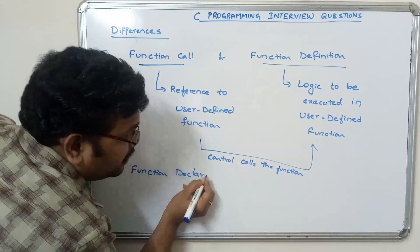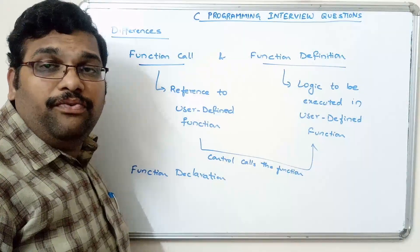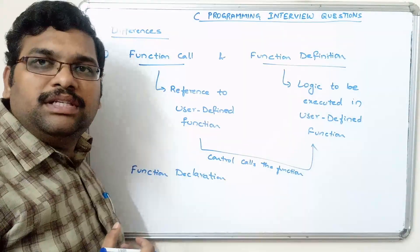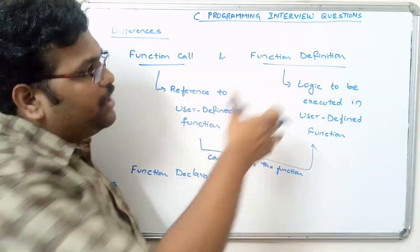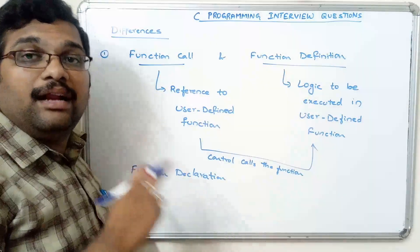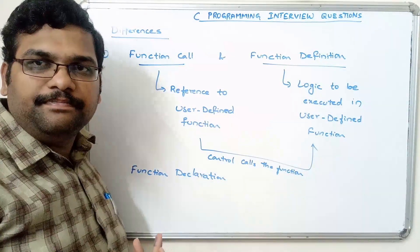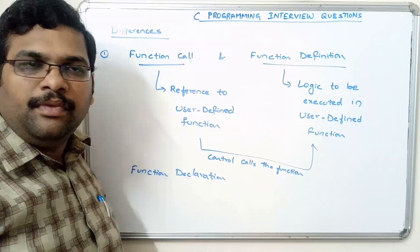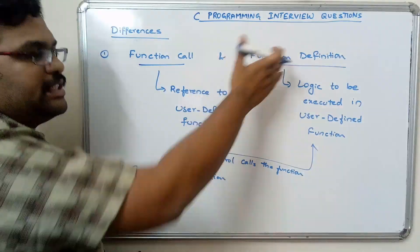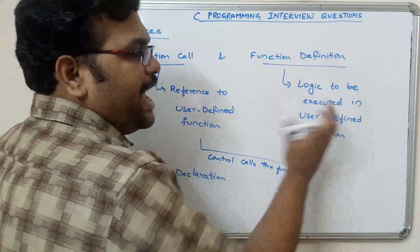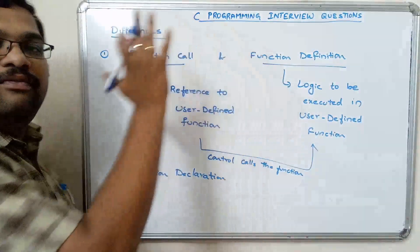Function declaration works similarly to variable declaration. The main rule for using variables is that before using variables in the program, we have to declare them. Similarly, before using a user-defined function in the program, we have to declare that function. This declaration should be done outside and above the main function. The function call is the reference written to the function definition, and the function definition is the actual logic to be implemented.